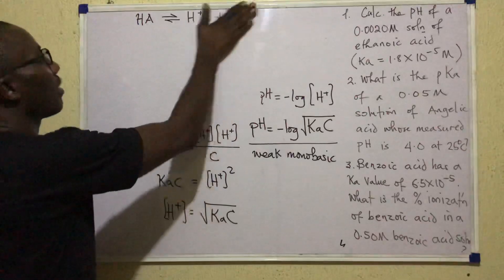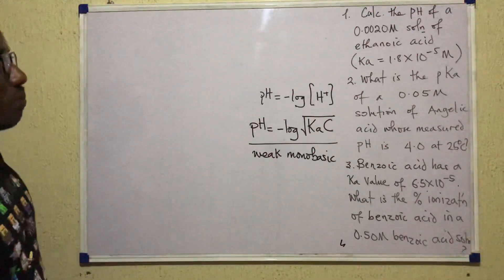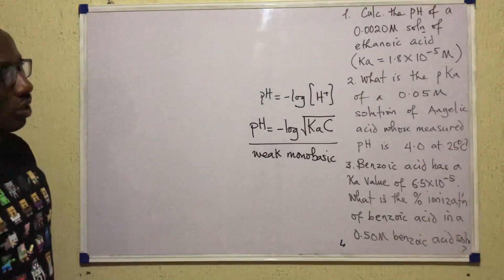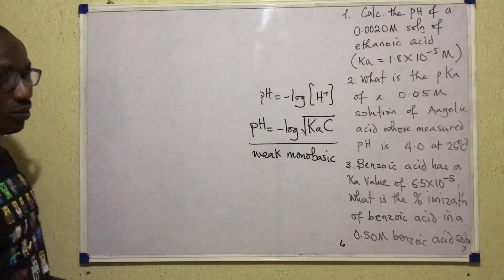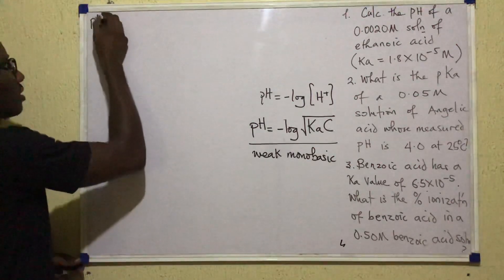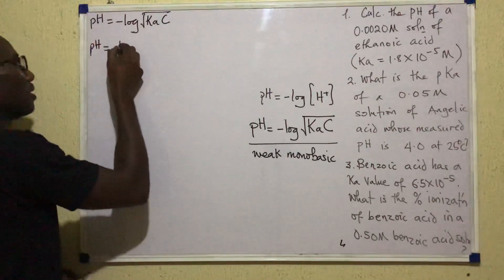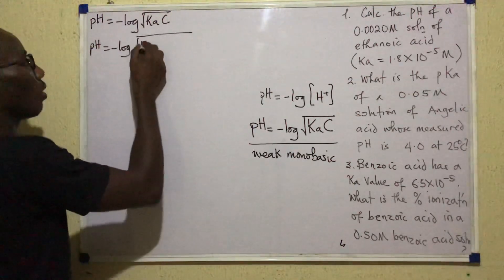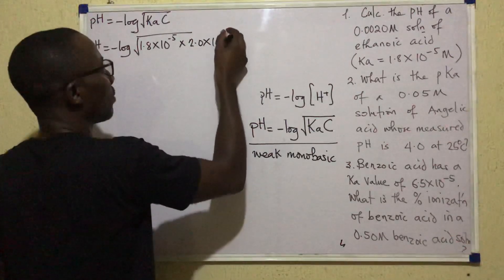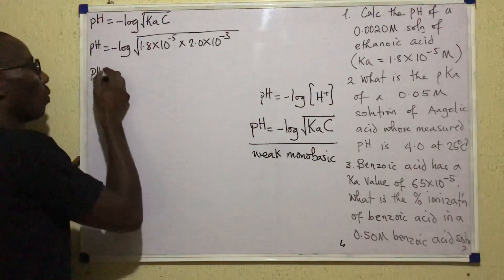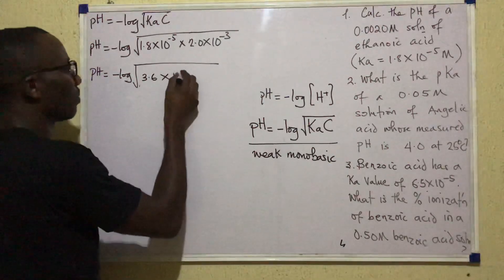Let's see how this formula applies with questions on the board. The first question says: calculate the pH of a 0.0020 molar solution of ethanoic acid. The molarity given is 2.0 × 10⁻³, and the Ka of ethanoic acid is given as 1.8 × 10⁻⁵. So pH equals the negative logarithm of √(KaC).